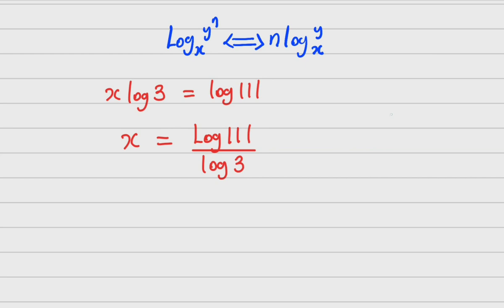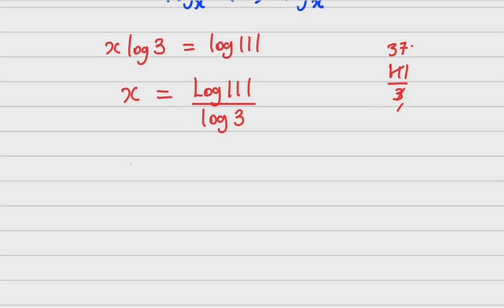Now, can 3 divide 111? You can see that it actually can divide. Three into 11 is three times, remaining two; bring the two into one, that's seven times. So 111 equals 3 times 37. Therefore x equals log(3 × 37) all over log 3.